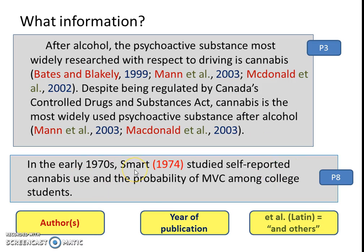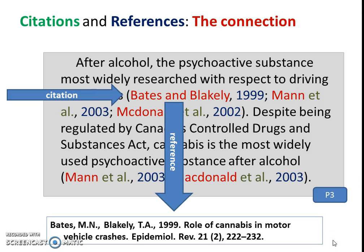Sometimes the author is mentioned in the sentence itself — for example, 'In the early 1970s, Smart' — that's the name of the author — and then we put the citation year in brackets: '1974, studied self-recorded cannabis use.' So I can go back to the list of references at the end of the article, find Smart's article from 1974, and get the full reference.